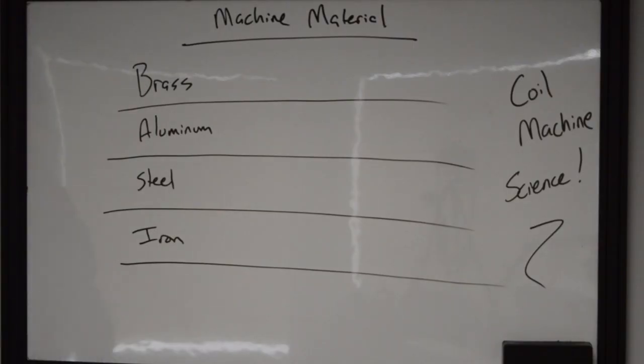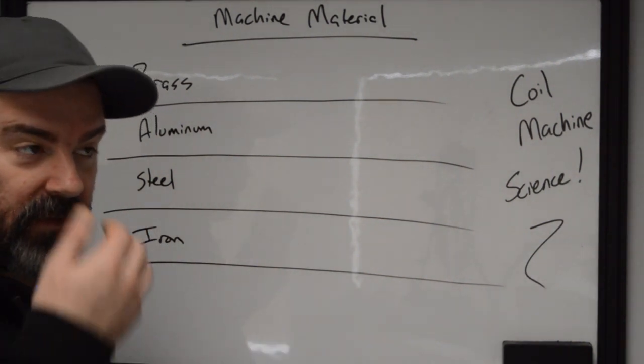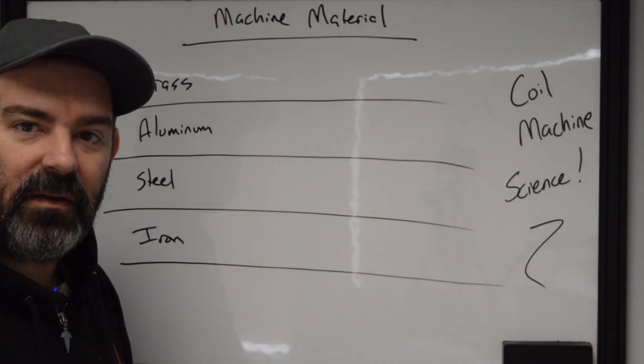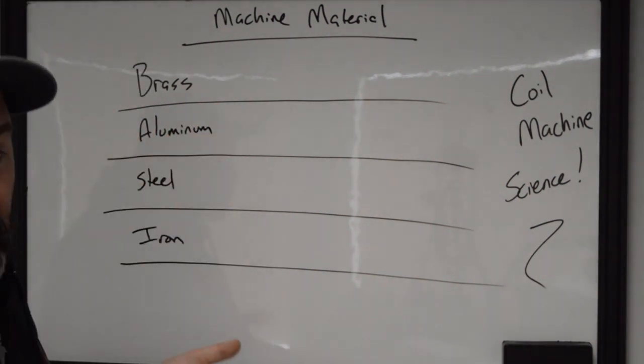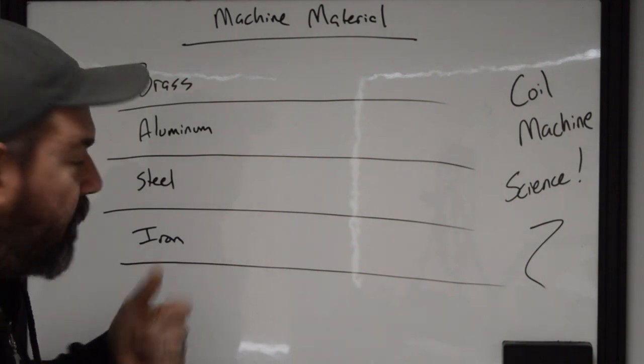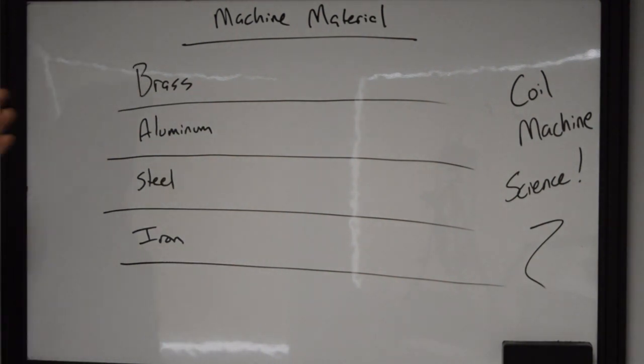All right, now that's over with machine material. Now you can make a machine out of anything. I found machines made out of plastic, which is just weird. So I'm going to go with the most commonly used machine materials that we see out there in public. Let's just discuss what's the pros and cons of these ones, right?